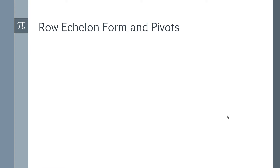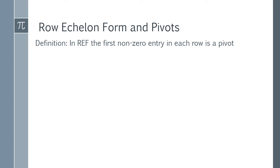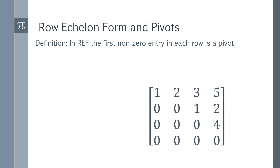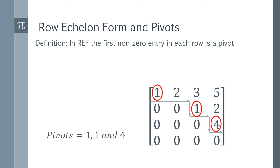Now, the really important bit is the relationship between row echelon form and pivots. Once you've got a matrix in row echelon form, finding the pivots is really easy — the first non-zero entry in each row is a pivot. Here we have a matrix in row echelon form, with the first non-zero in row one, the first non-zero in row two, and the first non-zero in row three, plus a row of zeros correctly at the bottom. The circled entries are your pivots: one, one, and four.